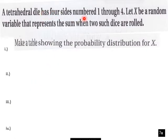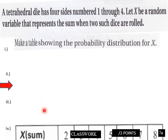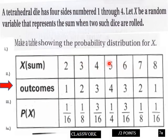A tetrahedral die has four sides, so here is our table. We have 2, 3, 4, 5, 6, 7, 8, and a tetrahedral die has four sides, one through four. So here are our outcomes: 1, 2, 3, 4, 3, 2, 1. These are the probabilities of these happening here.